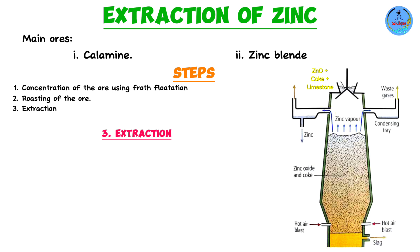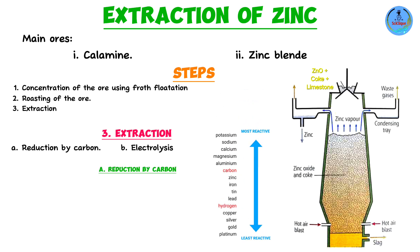Extraction of zinc metal from the oxide can be done in two ways: number one, reduction with carbon, and number two, electrolysis. Starting with reduction by carbon — carbon is a non-metal but is more reactive than zinc and can therefore be used to reduce zinc oxide. This process takes place in a blast furnace.